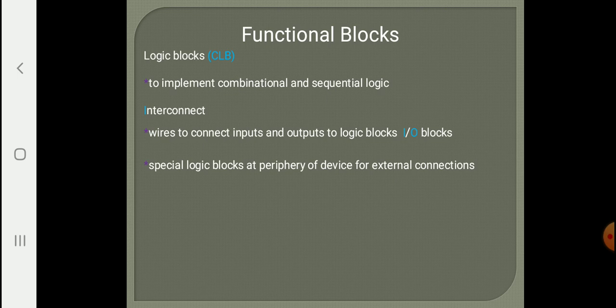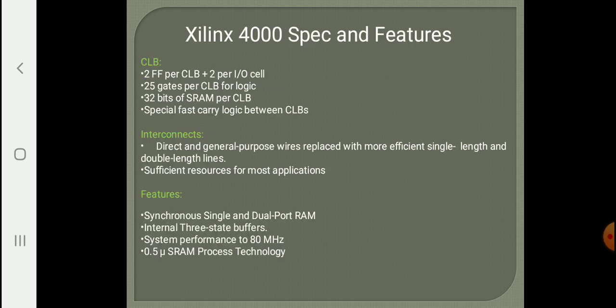The third block is the I/O block. I/O blocks are the means by which an external input can be supplied to your FPGA, or you can read whatever is present in your FPGA through that I/O block — so it acts as a simple I/O unit. Some specific features of the 4000 series CLBs: it has two flip-flops for storing the outputs generated by the function generators, and it has 25 gates per combinational logic block.